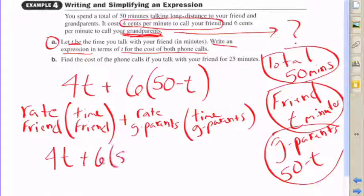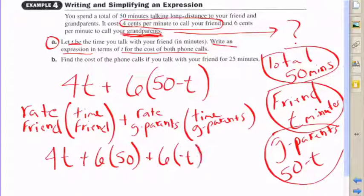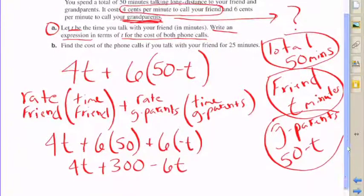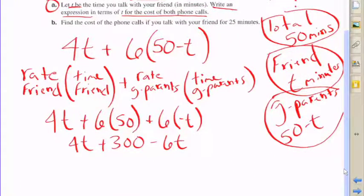So again, let's rewrite this variable expression, and this time we're going to use distributive property to show that what we're doing is six times 50 and then six times negative t.